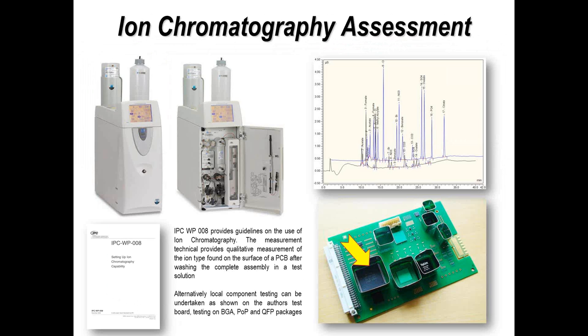Another technique is to do localized testing. Here you can see one of my printed circuit boards where we've mounted shields around the components. This was done by Doug Pauls of Rockwell Collins. The idea is to put test solution just around the component, leave it for a period of time — you can heat the test solution to improve solubility of residues. We actually did this on package-on-package components and then extracted the required amount of material to allow testing using ion chromatography. It's a more laboratory-based technique for measuring contamination prior to conformal coating.